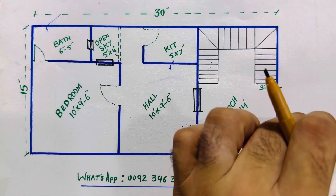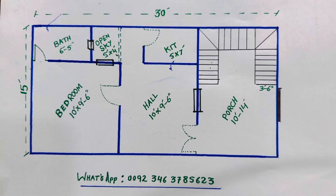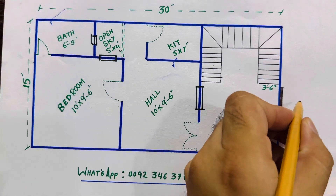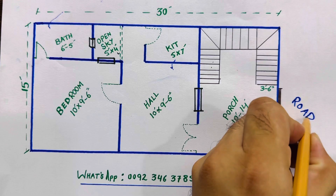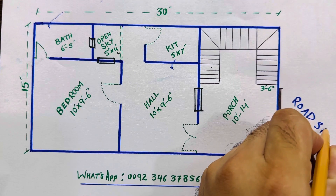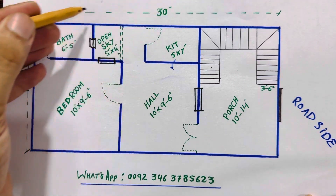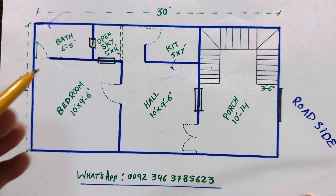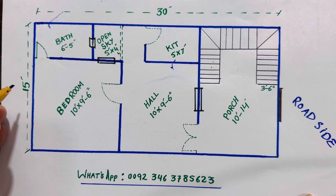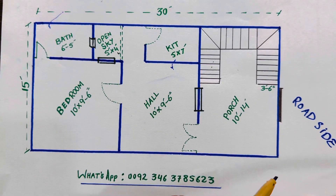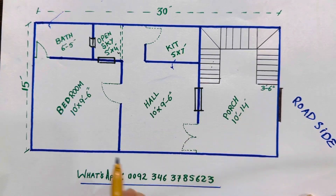How to make house planning step by step. As you can see here, this is the roadside. Three sides are closed: left side, right side, and back side. Only the front is open to this house.